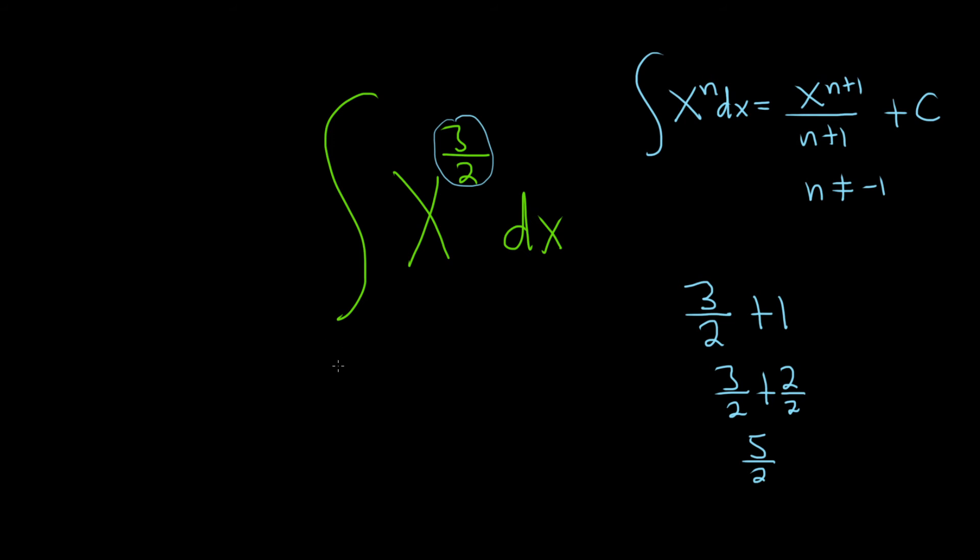Okay, so now we go back to our problem. We put the equal sign, drop the integral sign and the dx. So it's x to the 5 halves, and then you divide by 5 halves. And don't forget your plus C.